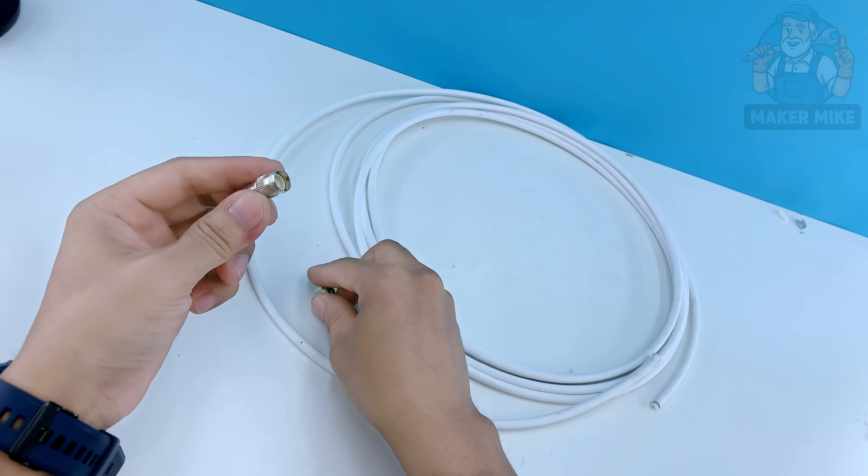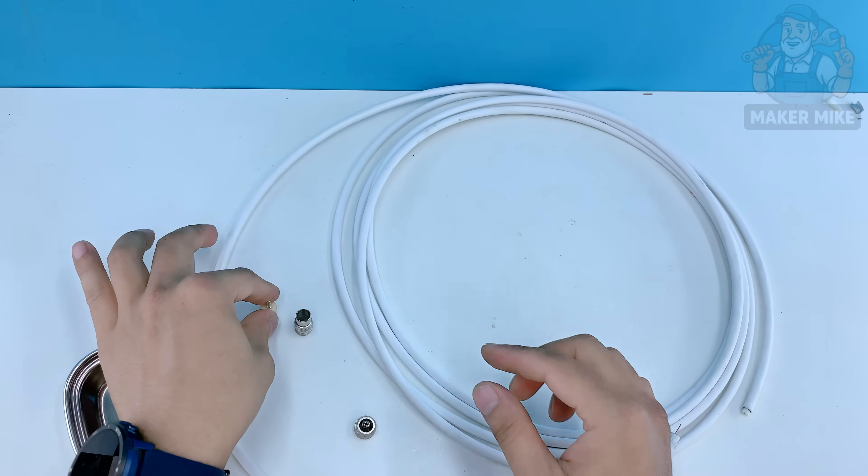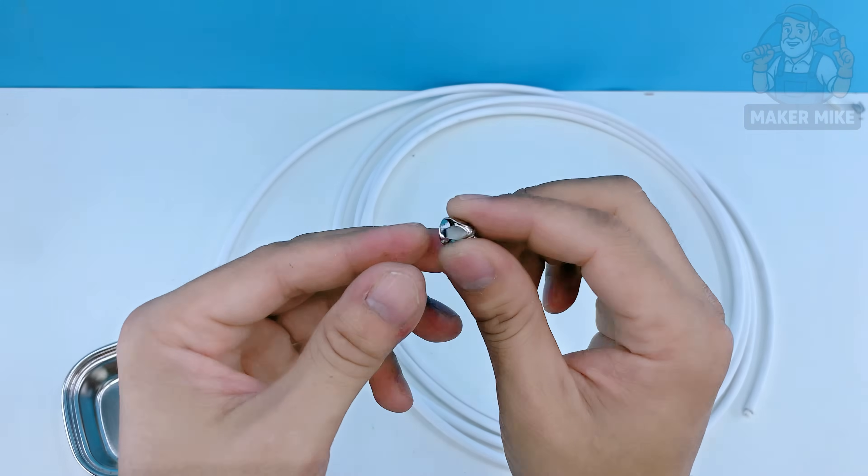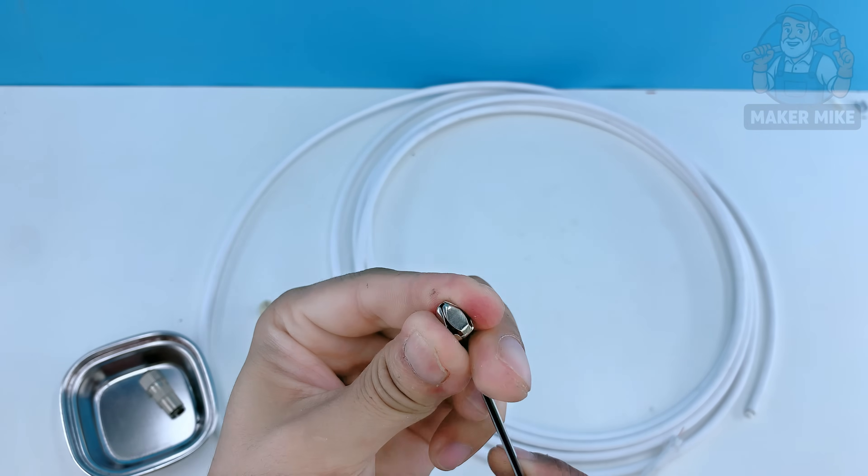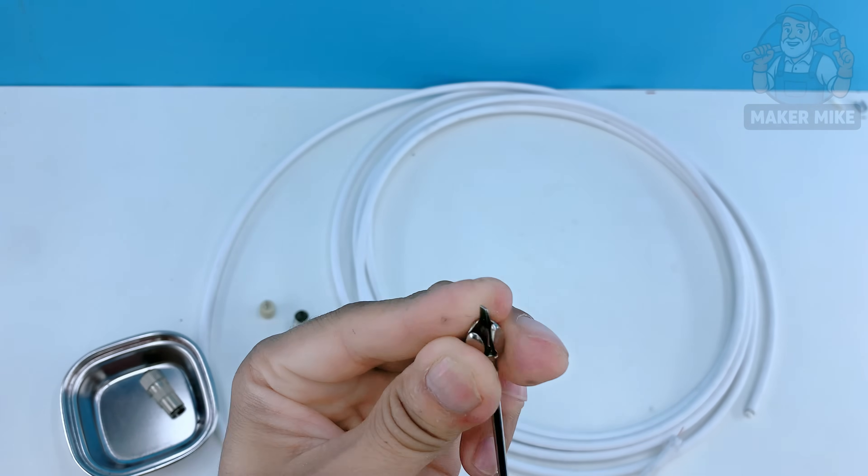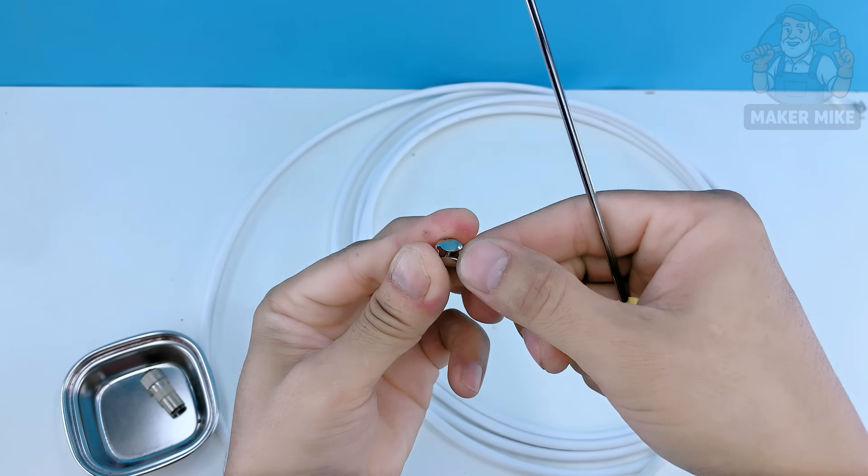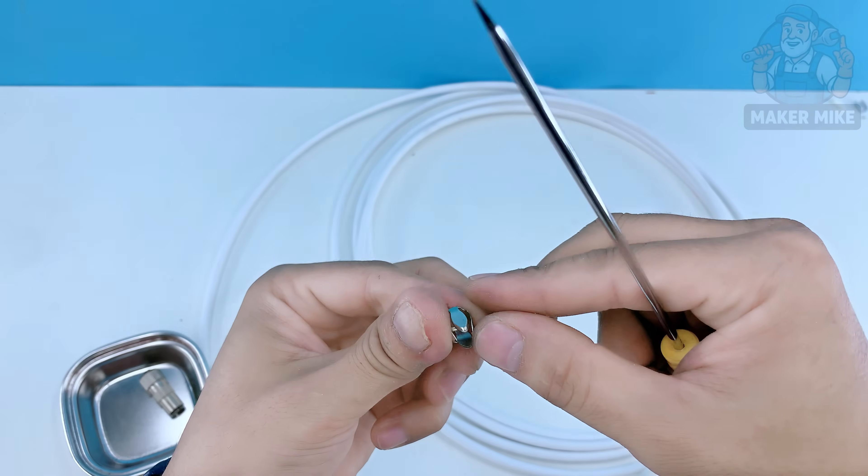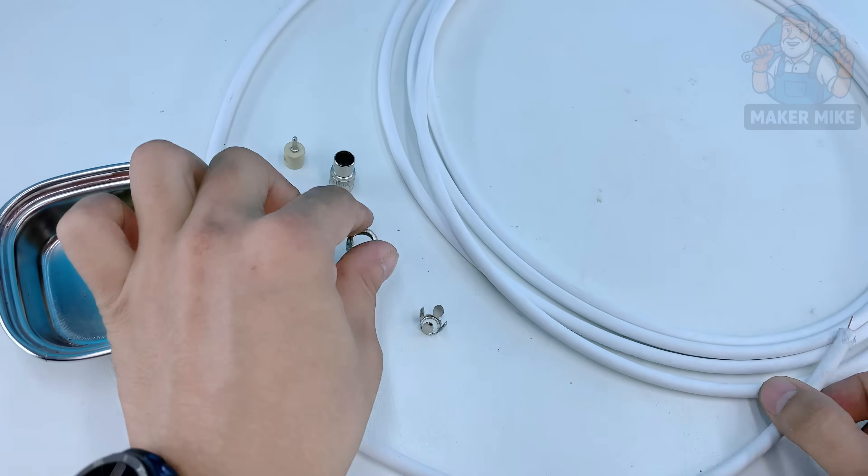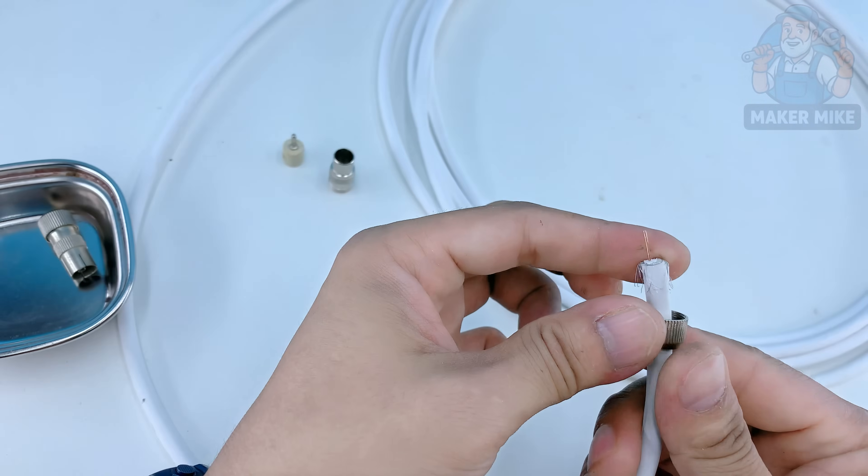Now take two F connectors, the same type used earlier, and screw one onto each end of the coax cable. Make sure the copper core extends just slightly beyond the metal tip, not too long or too short. A snug, clean connection means less interference and a clearer picture once it's hooked up.